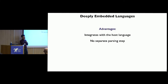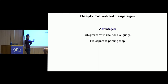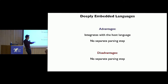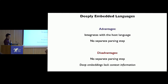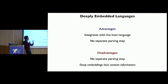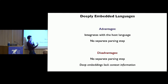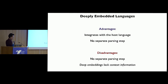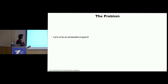Deeply embedded languages have some advantages. They integrate well with the host language, and one of the nice things is that they have no separate parsing and type checking step — some very smart people have already written my type checker for me, so I can just leverage that. A disadvantage: there's no separate parsing step, and this becomes a problem. The main problem is that my deeply embedded language has no context information. This is what we're interested in today — this idea of context.